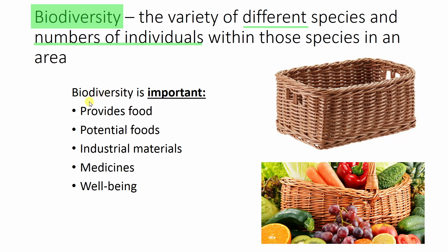So why is biodiversity important? First and foremost, it provides us with food — lots of different types of vegetables for a balanced diet and different types of land animals for our diet. Ultimately it provides a diverse food source. We also have potential foods: we don't know yet whether these could contribute to our nutrition and our progression in society, but that potential is important too.